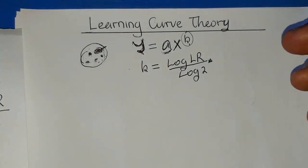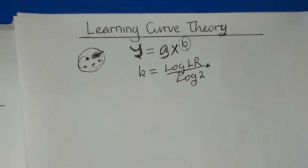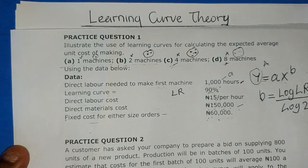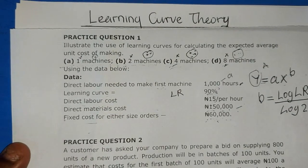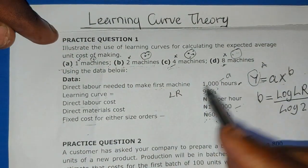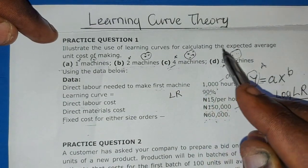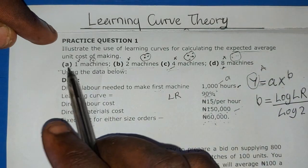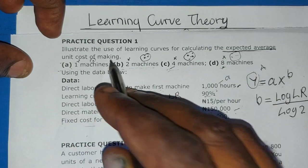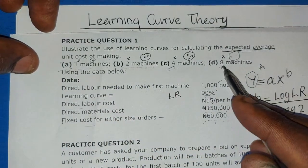Now let me bring a question to apply it. Look at this question — I want you to pause the video and read through the question. This question requires that we calculate the expected average unit cost of making one machine, two machines, four machines, and eight machines.